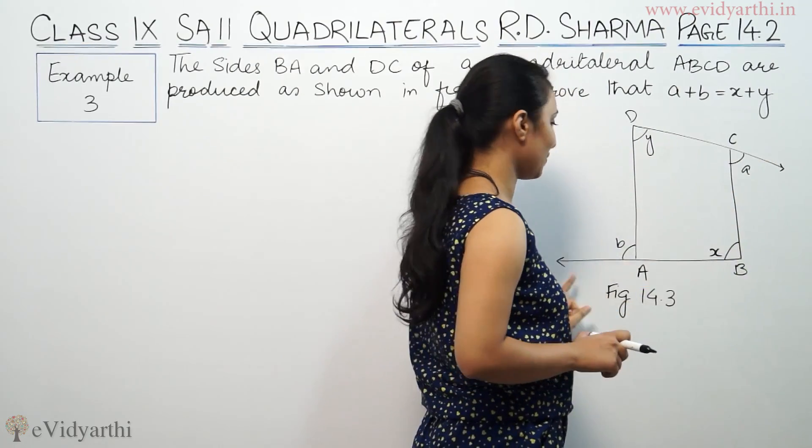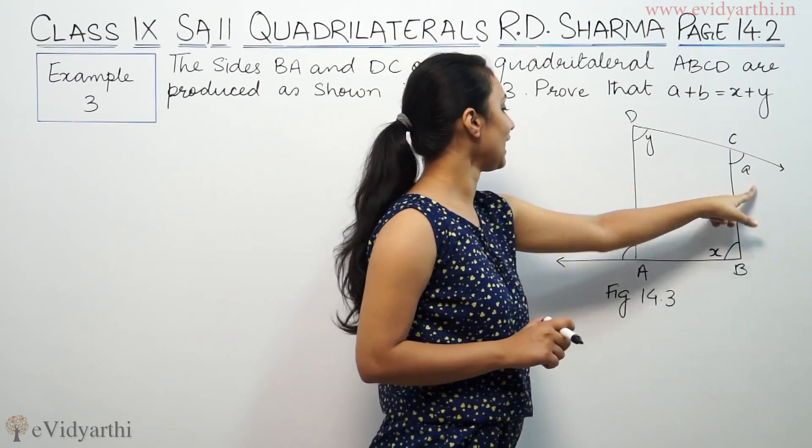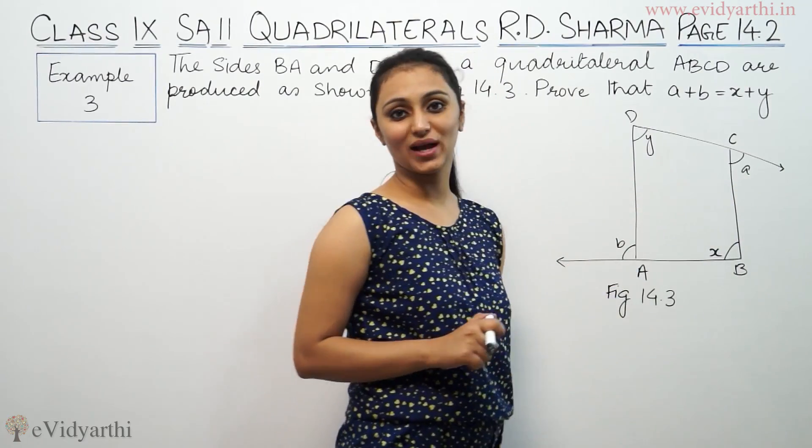It is BC and AB produced which says that A plus B, A plus B equals X plus Y. This is your proof.